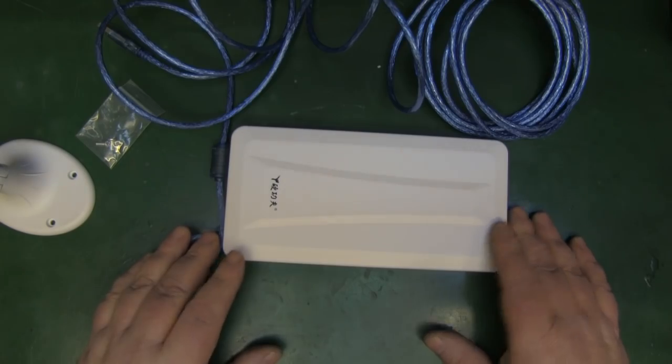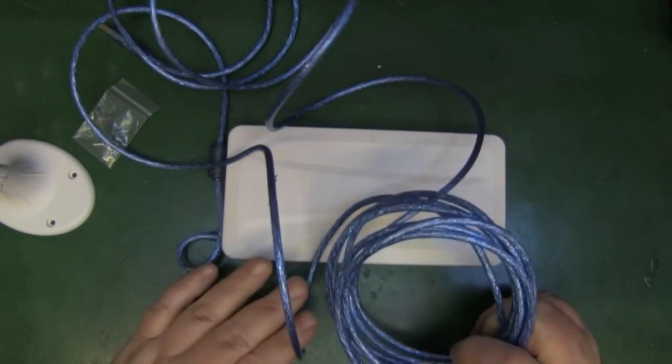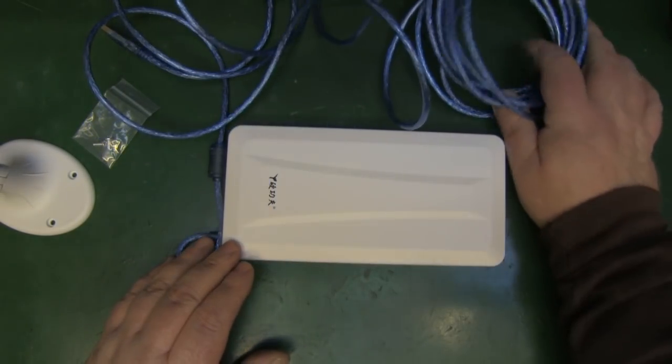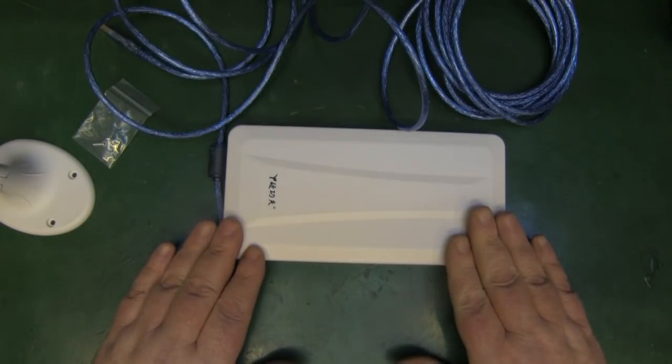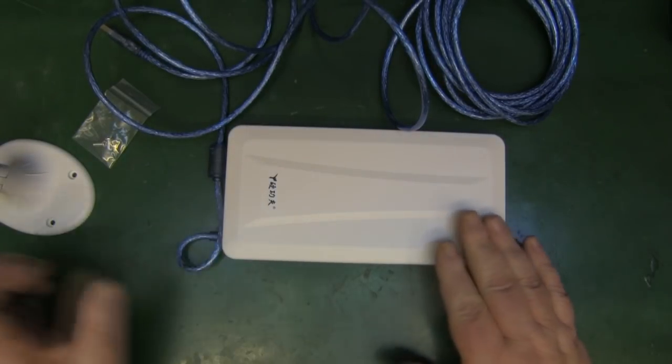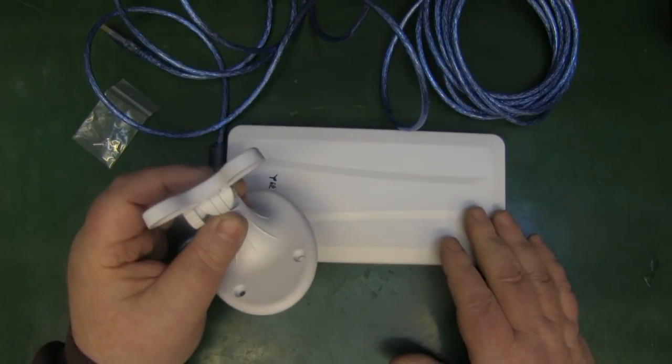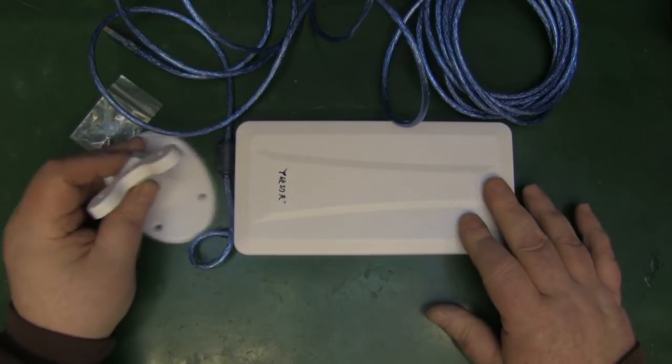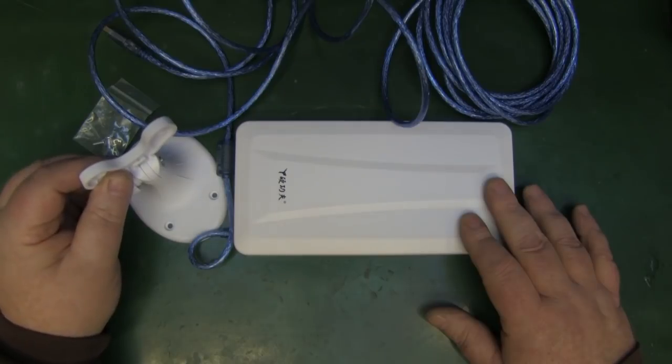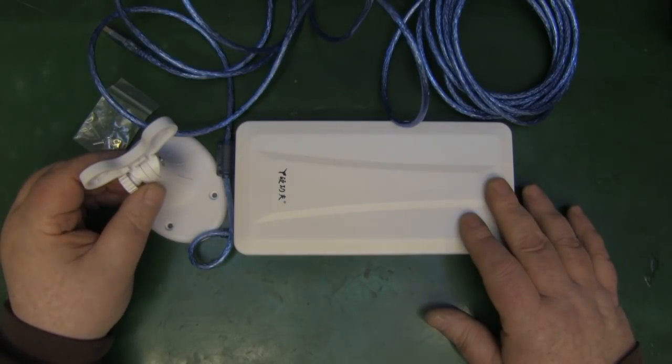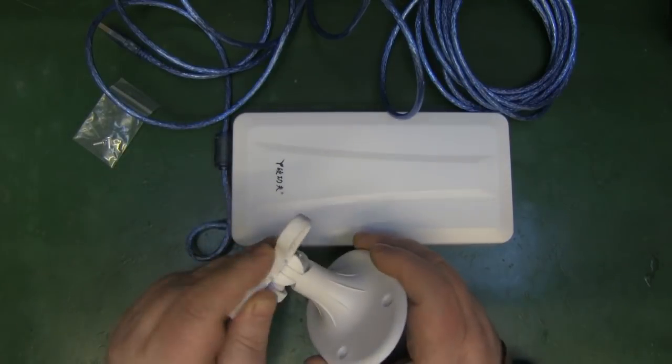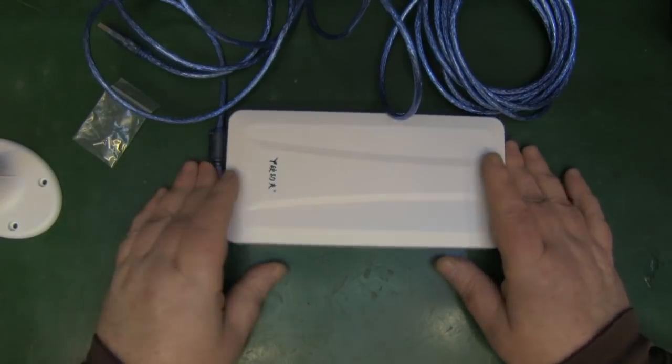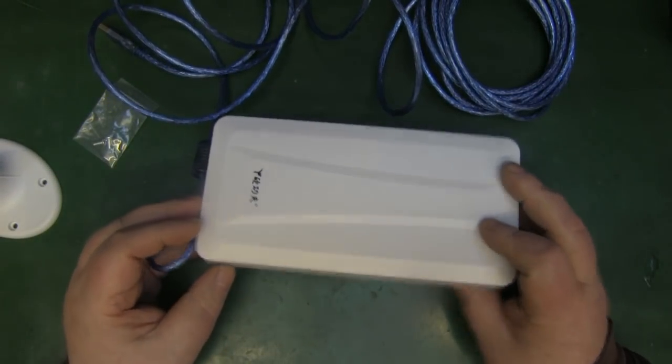It comes complete with this pretty lengthy USB cable. It is supposed to be waterproof so you can permanently connect this outside. It comes with this little mounting bracket here where you can have it stood on a bench or a table if you wanted to, or with the holes here you could mount it to a wall.